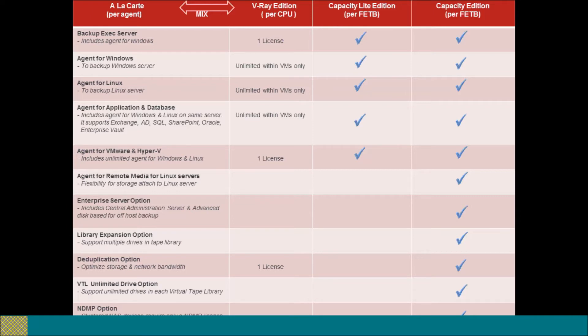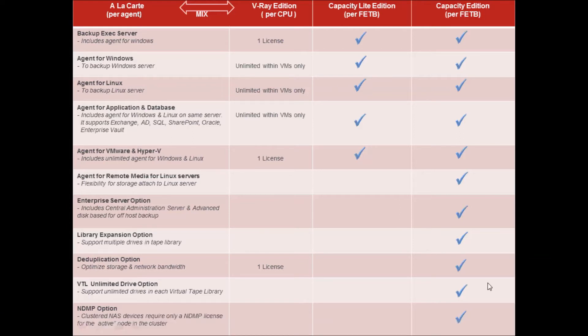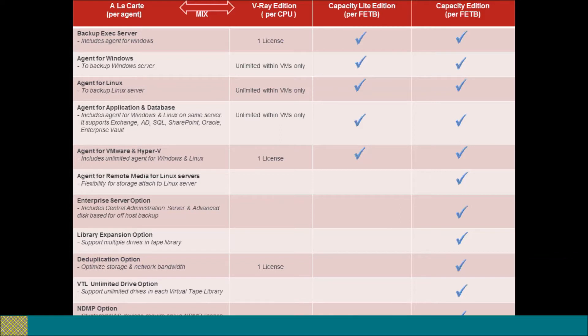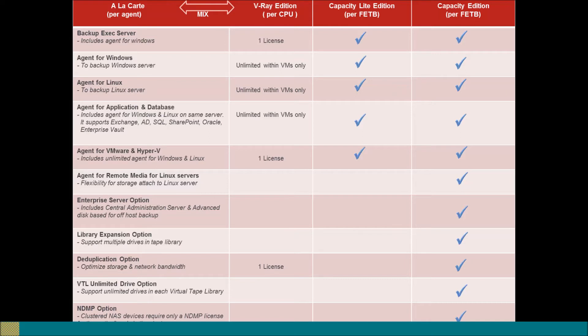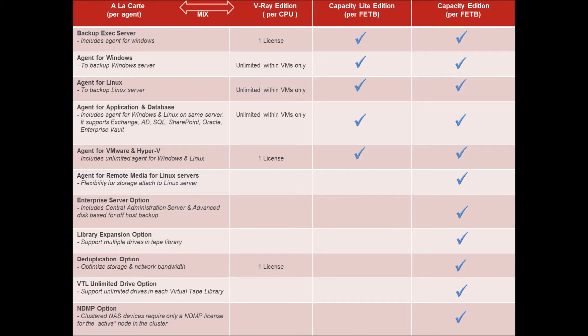The VTL Unlimited Drive Option supports unlimited drives in each virtual tape library. The NDMP Option is only required if you're trying to back up a NAS device, and if it's a clustered NAS device, you require only one license for the active node. One thing to add: backups to cloud are absolutely free. We have an option to maintain a copy of data on cloud platforms without any additional costs. The supported cloud platforms are Microsoft Azure, Amazon S3, and Google Cloud.